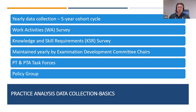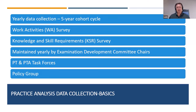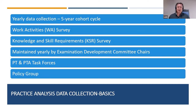We look at both surveys together and try to find the intersection between work activities that are important and corresponding knowledge and skill requirements that are also important — and that's what goes on the NPTE. Those surveys are maintained yearly by the exam development committee chairs. If we see something unexpected or a number that seems out of line — perhaps due to an edit or terminology changing in the field — the exam chairs have an opportunity to update that on a yearly basis. That's a huge advantage: if we make a mistake, it only affects us for one year and we can correct it.